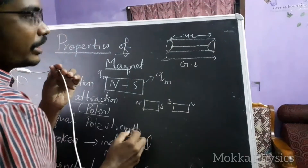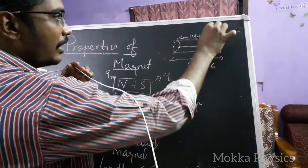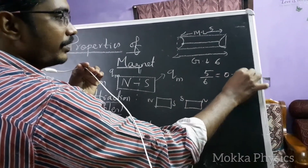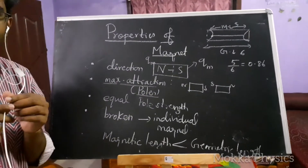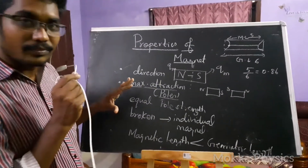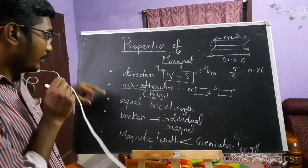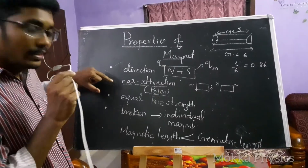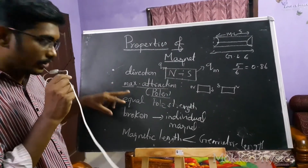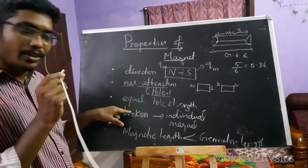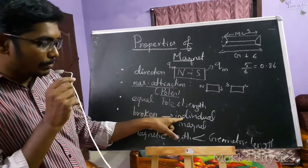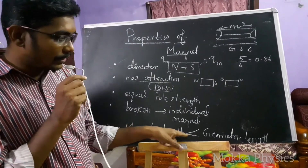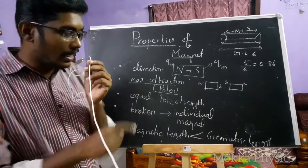The magnetic length is less than the geometric length. If the geometric length is 6, the ratio of magnetic length to geometric length is approximately 0.8. To summarize the five properties: a magnet always rests in the north-south direction; maximum attraction is at the poles; both poles have equal pole strength; breaking a magnet produces individual magnets, meaning monopoles do not exist; and magnetic length is less than geometric length.